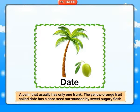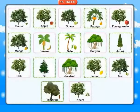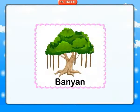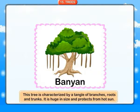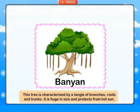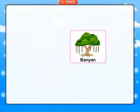The yellow-orange fruit called date has a hard seed surrounded by sweet, sugary flesh. Banyan: this tree is characterized by a tangle of branches, roots and trunks. It is huge in size and protects from the hot sun.